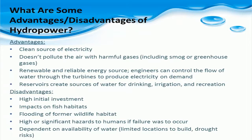Perhaps the largest downside to hydropower over other energy sources is that it is location dependent. Hydropower requires access to a flowing source of water, and as such, only so much energy can be derived from hydropower at any given time. This is part of the reason why fossil fuels are a much more attractive option, and why it is imperative to develop more far-reaching sources of renewable electricity.